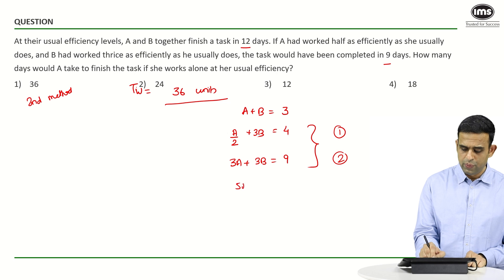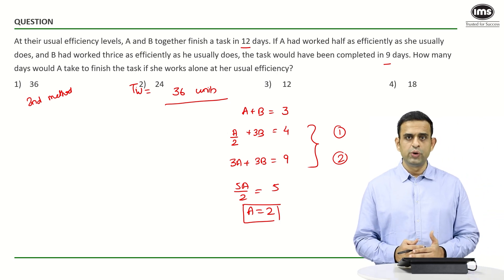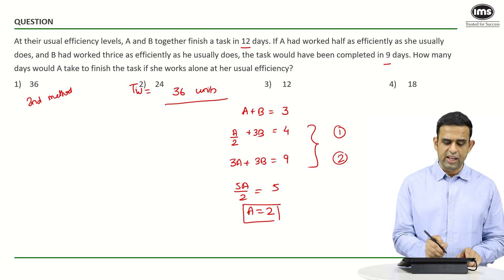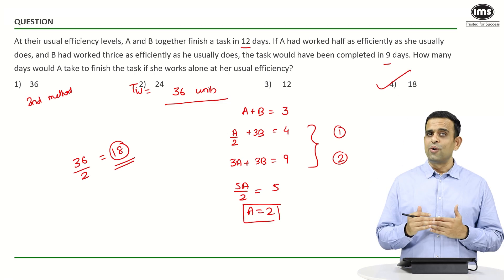The per-day work done by A is 2. If per-day work done by A is 2 and the amount of work is 36 units, how much time will A take? That's 36 ÷ 2, giving us 18. So the answer is option number 4.